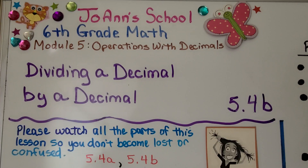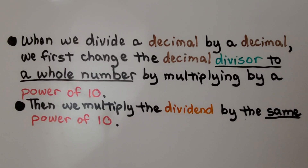This is lesson 5.4b, the second part of 5.4. We're going to be dividing a decimal by a decimal. In the first part of this lesson, 5.4a, we learned how to divide a decimal by a whole number.